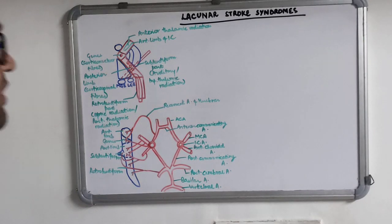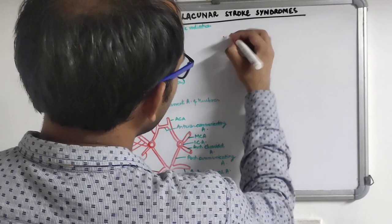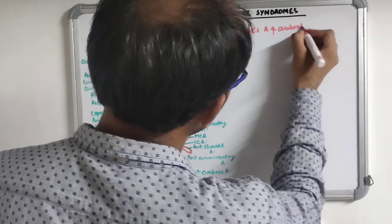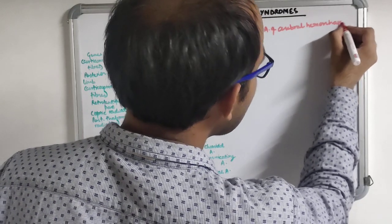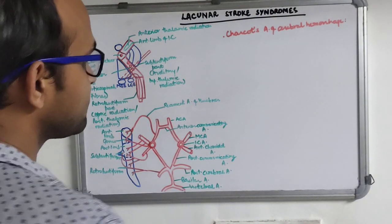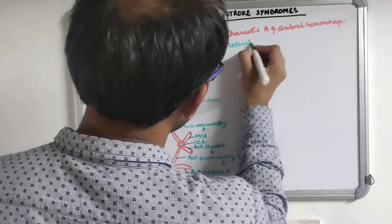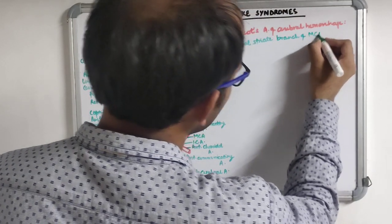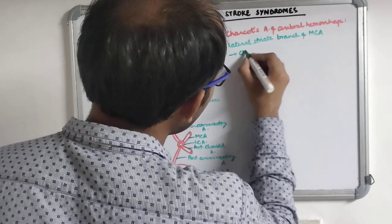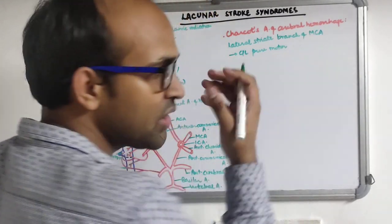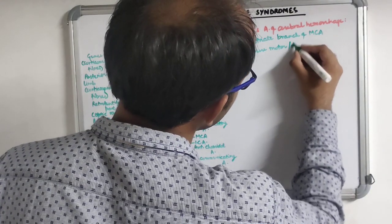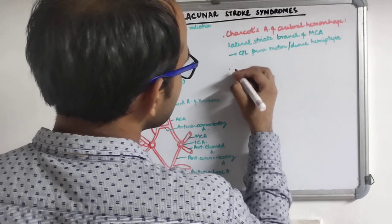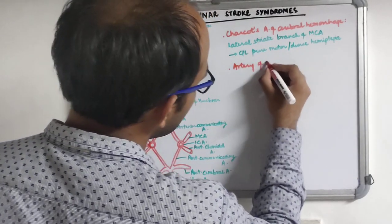Now we will talk about some important one-liners. First is the Charcot artery of cerebral hemorrhage, which is the lateral striate branch of the middle cerebral artery. The effect of its occlusion will be contralateral pure motor or dense hemorrhage, including face, arm, and lower limbs.